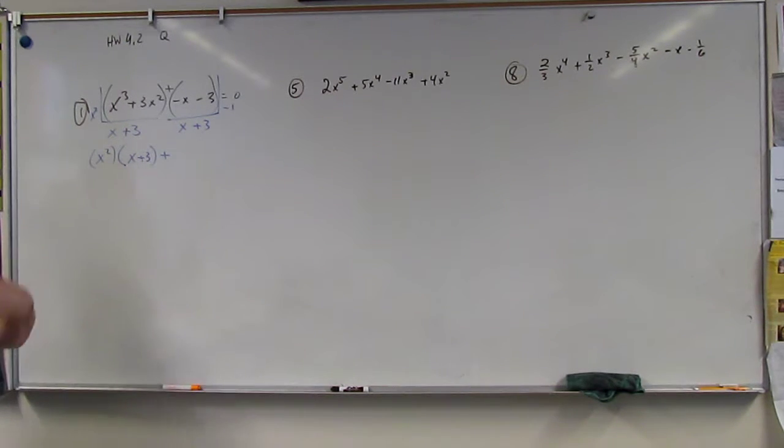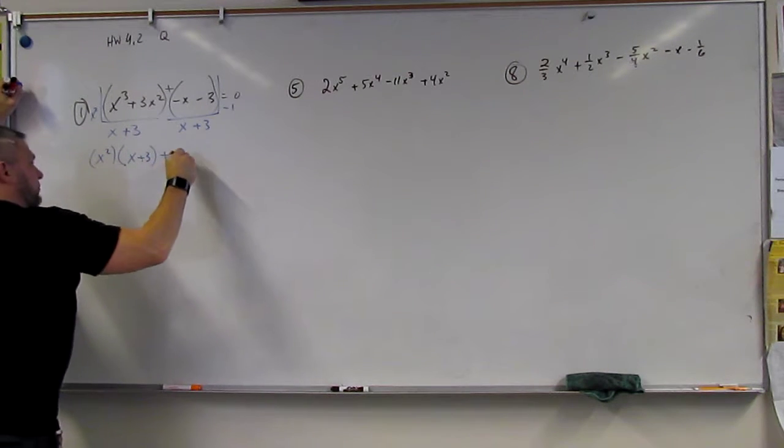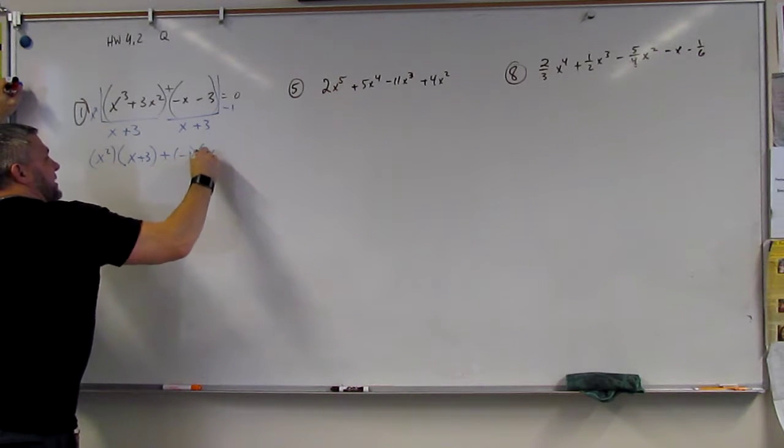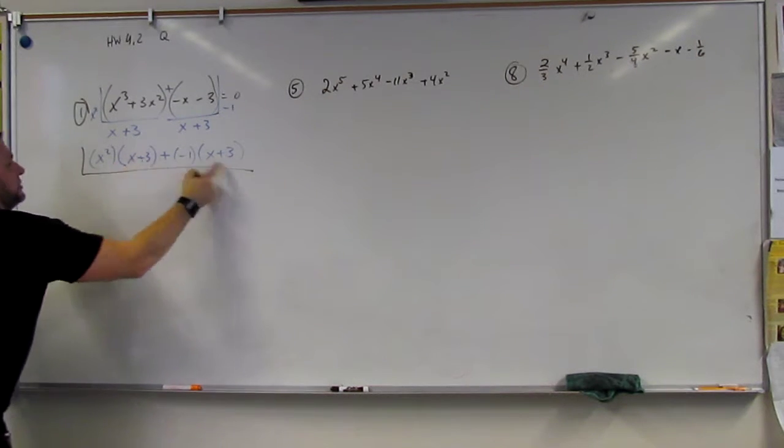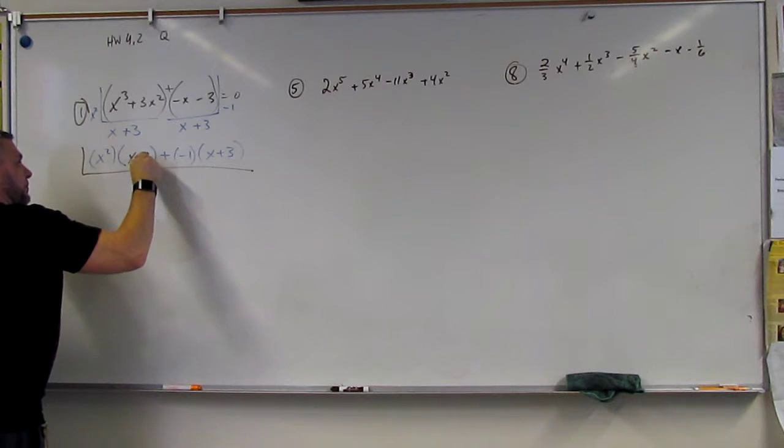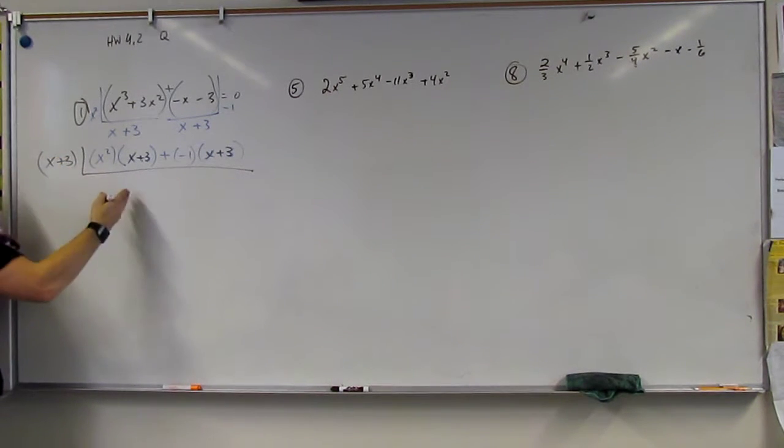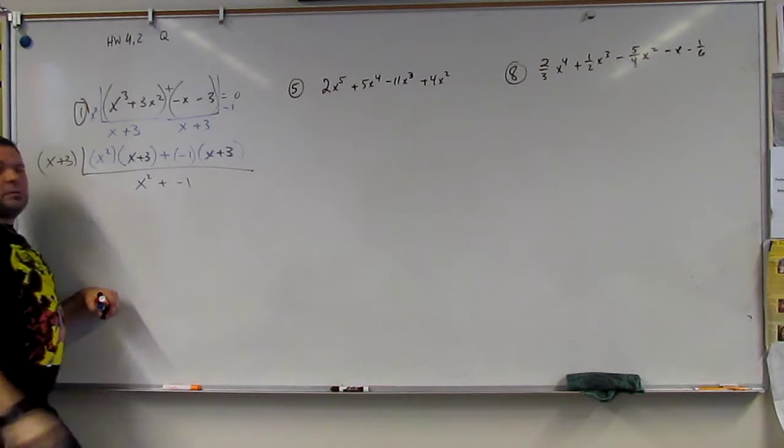And if you remember last year, this is great. Actually, we can just keep these together. But I'm going to show you first. It's going to be negative 1 times X plus 3. And then I'm going to say, well, what's in common? What's in common between these two that are being added? Yeah, the X plus 3. And so I can pull out an X plus 3, and what will be left is X squared plus negative 1. Yes.